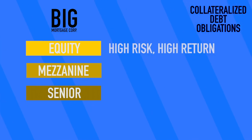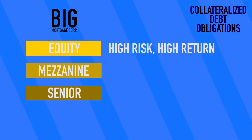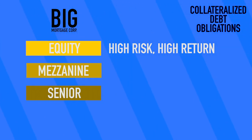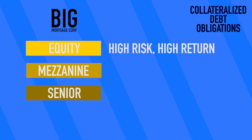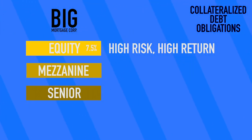Equity is the lowest level — highest risk, but highest return. They hold the shares of the riskiest mortgages. If borrowers default, holders of equity-level CDOs are the first to feel the pain. However, if borrowers do end up paying up, the equity tranche gets back the most money. For example, rather than 5%, let's say they get back 7.5% on their investment. If you want to take the risk, it could pay off a lot better than other investments.